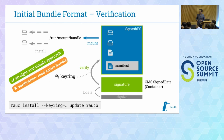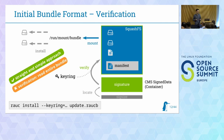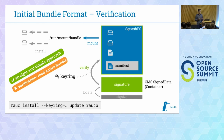On the target side, when calling RAUC install, we use the size field to locate the signature, then use the signature to verify the integrity of the entire SquashFS. Once verified, we can mount it and access the individual files. This is a straightforward approach, and the benefit of using SquashFS over any archive is that we can directly mount it without having to unpack anything. A drawback is that we have to verify the entire SquashFS when installing, which can be a bit slow.